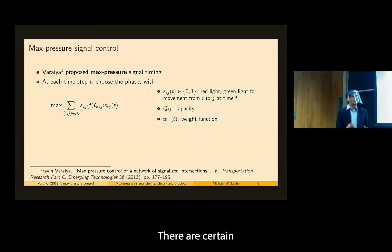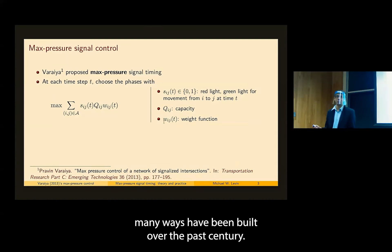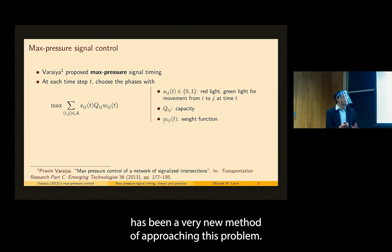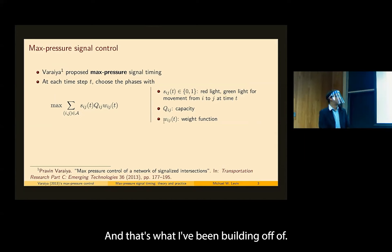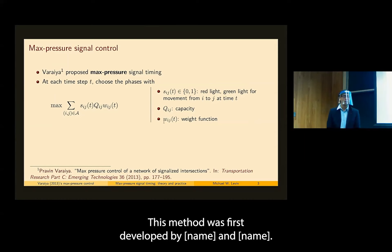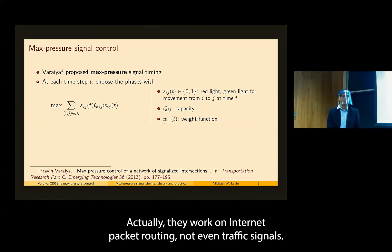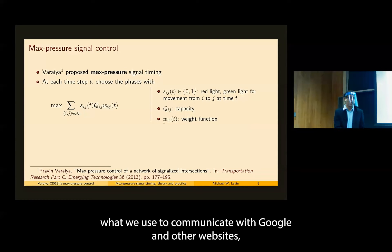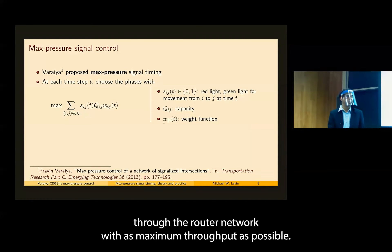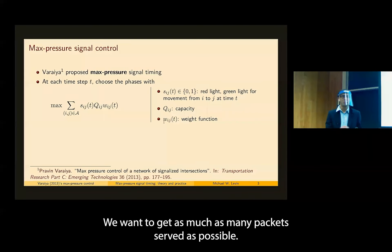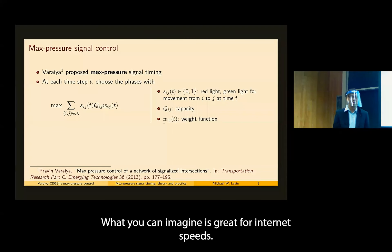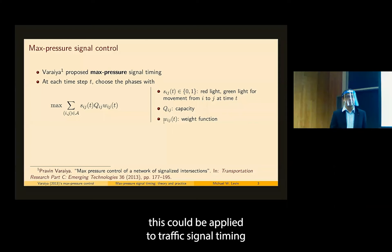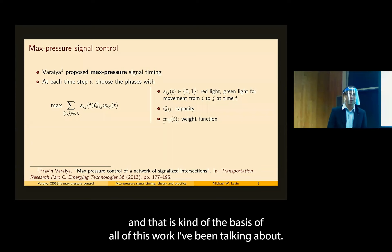There are certain standard ways of doing traffic signal timing, many developed over the past century. But recently there has been a very new method of approaching this problem that I've been building off of. This method was first developed by Tassiolis and Ephraimides, who worked on internet packet routing. In 1992, they had a paper trying to get packets through the router network with maximum throughput. In 2013, Pravin Varaya at UC Berkeley noticed this could be applied to traffic signal timing.